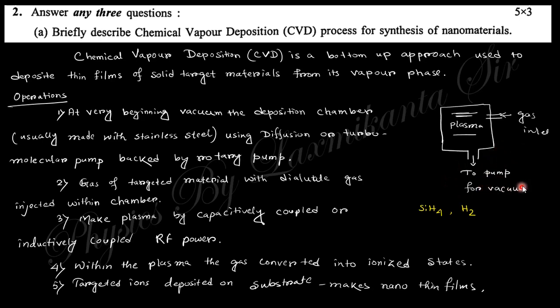We use diffusion or turbomolecular pump backed by rotary pump. We need to vacuum because air molecules act as impurities. First we vacuum, then we inject the gas which is required. If you want to make a thin film of silicon, you need to put inlet gas as silane, and carrier gas as hydrogen as a diluted gas. So inject hydrogen and silane gas.